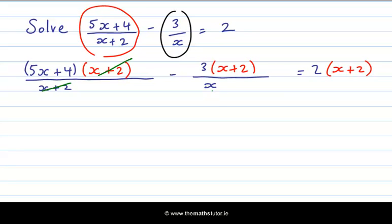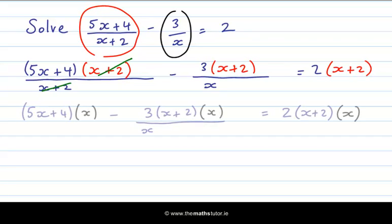Now we only have one more denominator, and that is x. We can get rid of that by multiplying both sides of the equation by x. And the reason we do that is so that we can cancel out the second denominator.